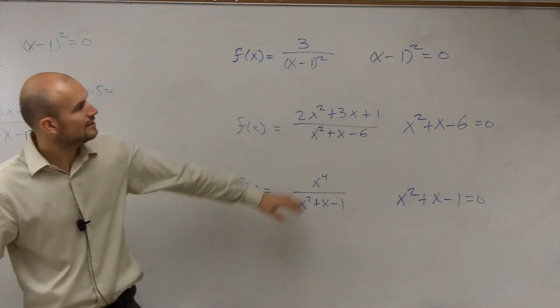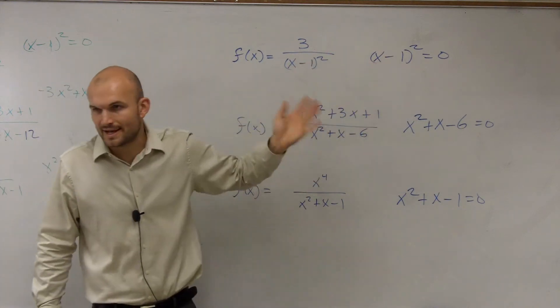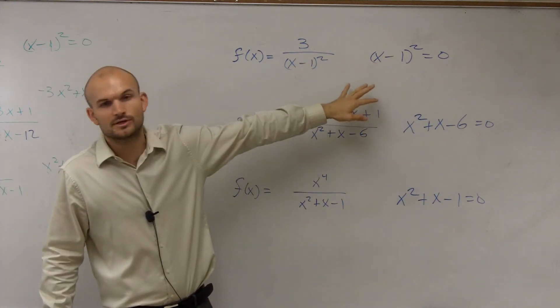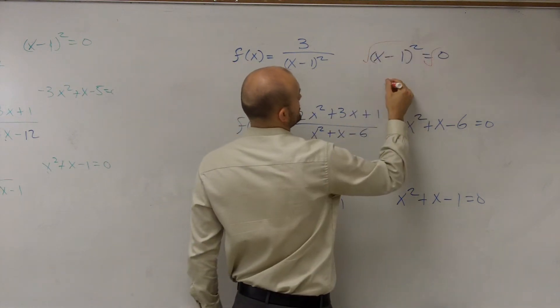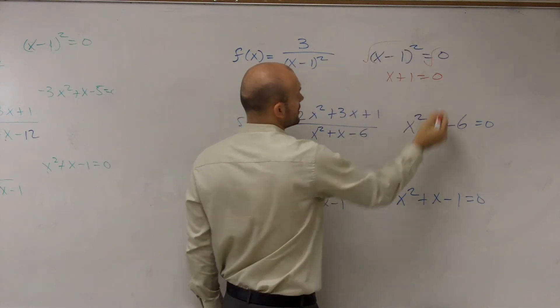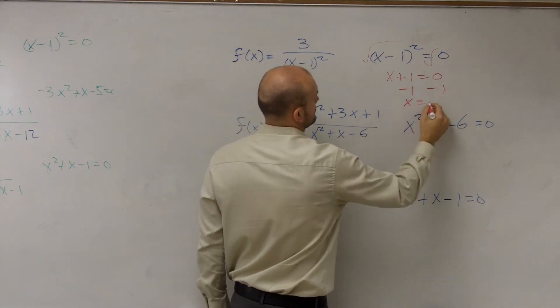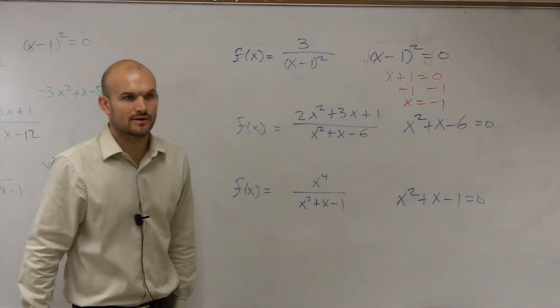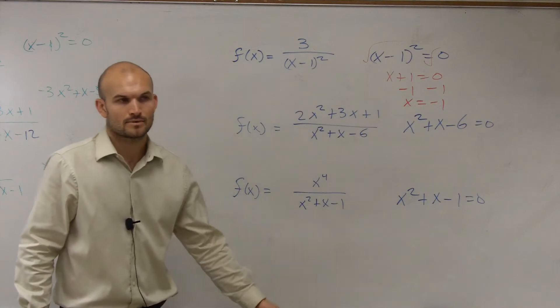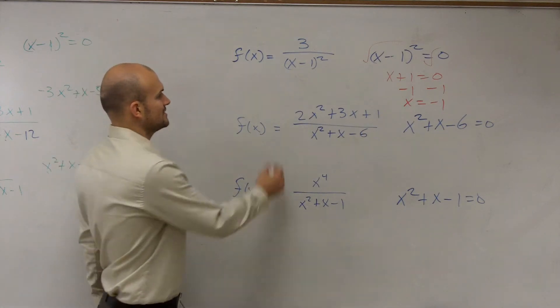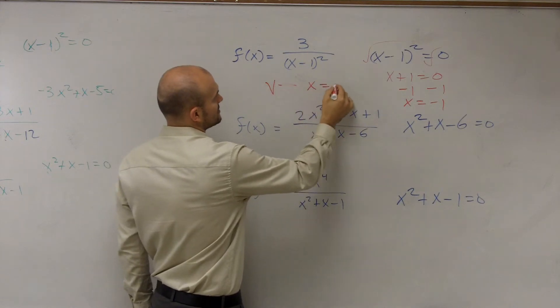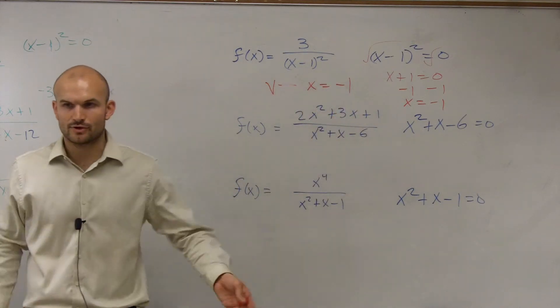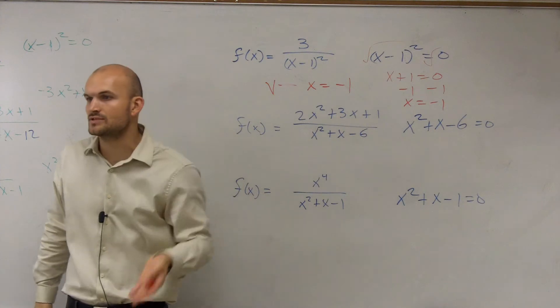So let's get to the first one. The first one, you can multiply that out, but you guys notice this is actually where we can use the square root property. Just take the square root of both sides. So you have x plus 1 equals 0. So x equals negative 1 under the square root on both sides. So I can say my vertical asymptote is when x equals negative 1, because x equals negative 1 is a vertical line.